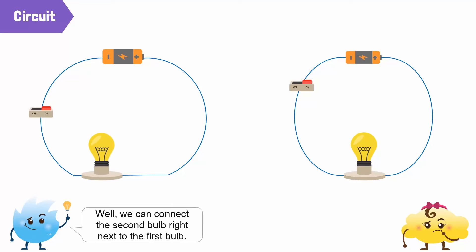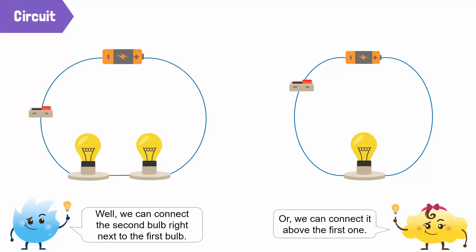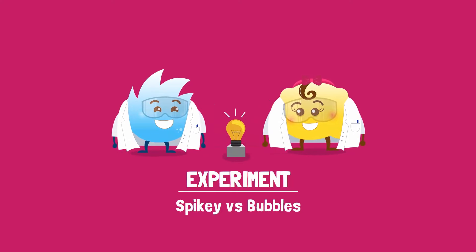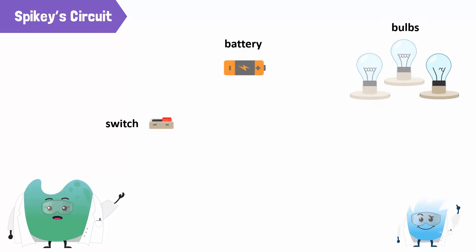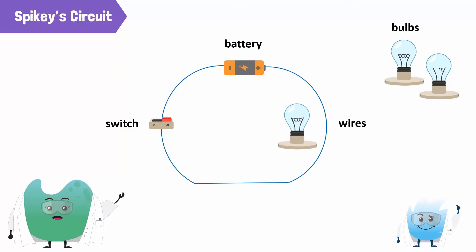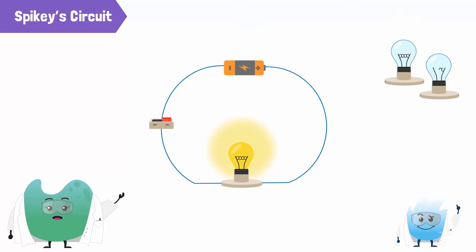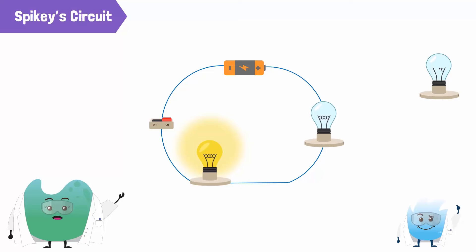Well, we can connect the second bulb right next to the first bulb, or we can connect it above the first one. Let's make Spiky's circuit first. We need a battery, a switch, three bulbs — two that work and one that's burned out — and connecting wires. Let's set up the circuit. Now let's add another bulb right next to the first one.